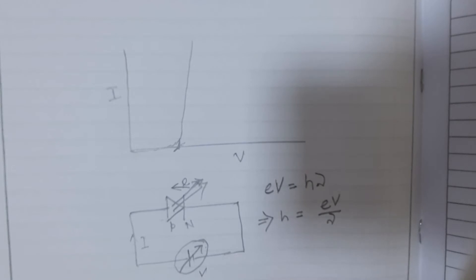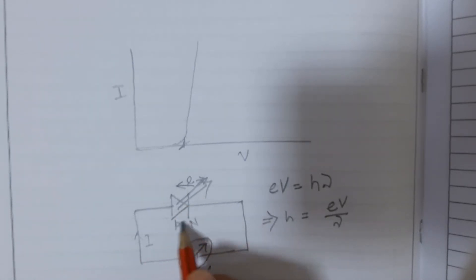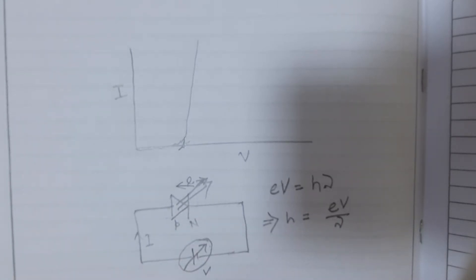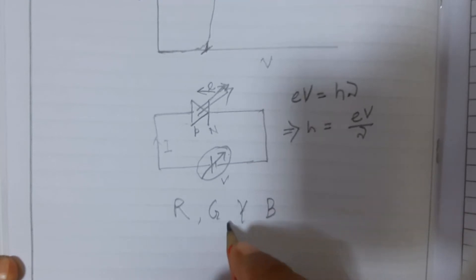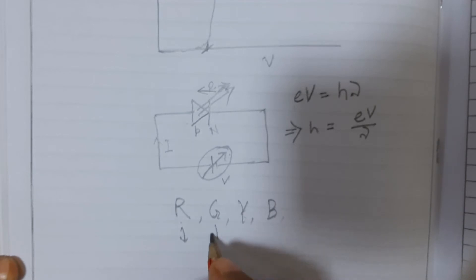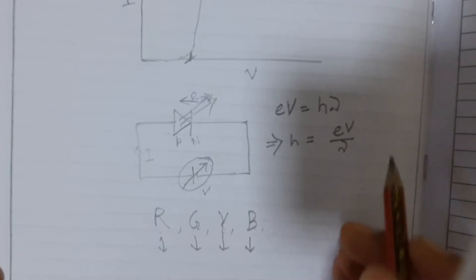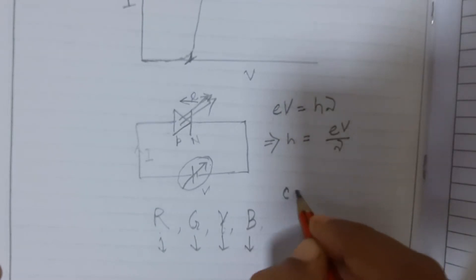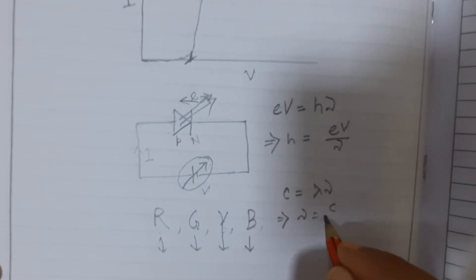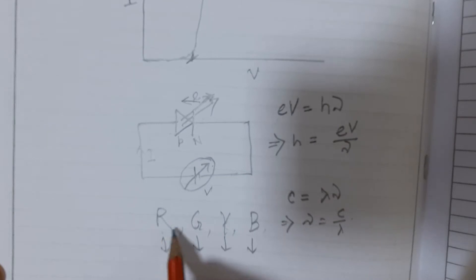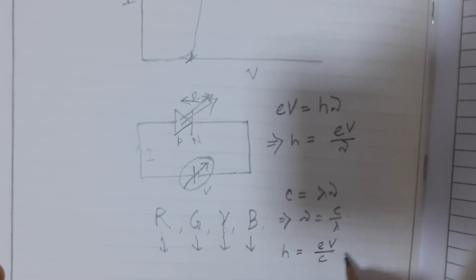From this, h can be written as eV / ν. You will be supplied with different LEDs — red, green, yellow, and blue — and corresponding to these different diodes you will have red, green, yellow, and blue light coming out. As you see these different lights, ν changes because c = λν, and from here you can write ν = c / λ. Substituting, h = eV·λ / c.